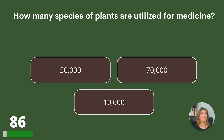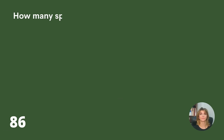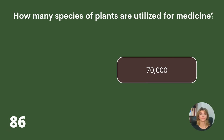How many species of plants are utilized for medicine? 50,000, 70,000, or 10,000? Answer: 70,000.